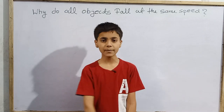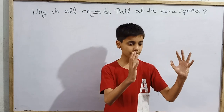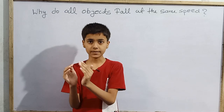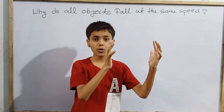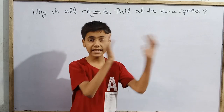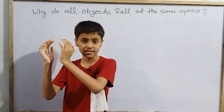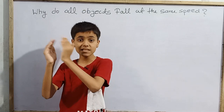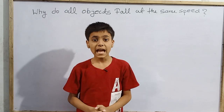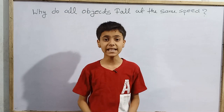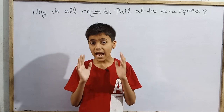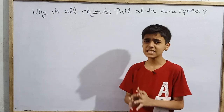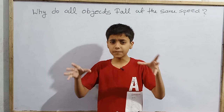If we have two bodies — one body here and another body here — and one is bigger and more massive than the other, and we drop both from the same height at the same time, what will happen? First of all, Aristotle claimed that two bodies will fall differently.